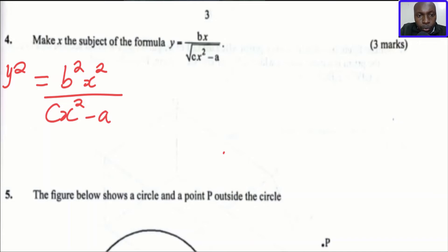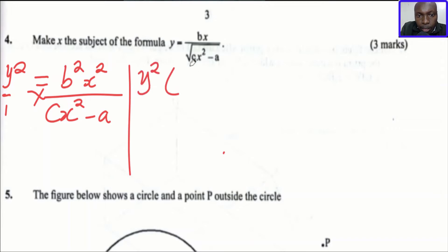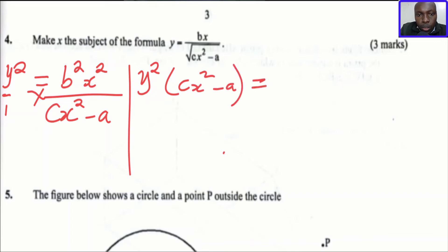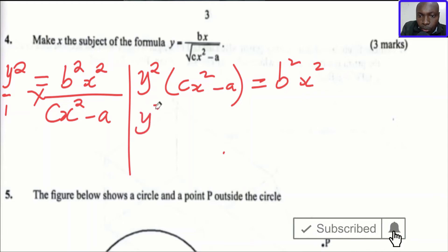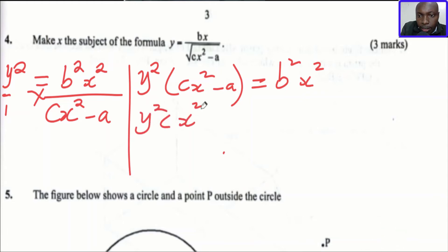The next thing we do — we can write y squared over 1 and then cross multiply. So y squared multiplied by cx squared minus a equals b squared x squared multiplied by 1. Opening the brackets, we get y squared cx squared minus y squared a equals b squared x squared.